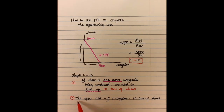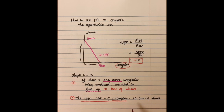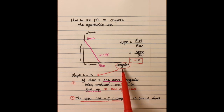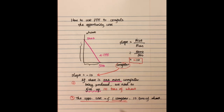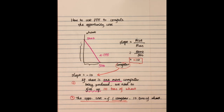Pay attention — this negative 10 represents the opportunity cost of one computer because we put computers on the horizontal axis. So we can use this slope to get the opportunity cost of one computer. If you put wheat on the horizontal axis instead, the slope would tell you the opportunity cost of one ton of wheat rather than one computer. So if you put computers on the horizontal axis of the PPF, the slope tells you the opportunity cost of one computer.